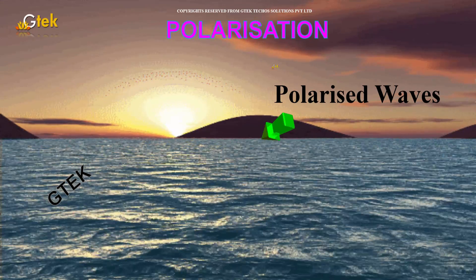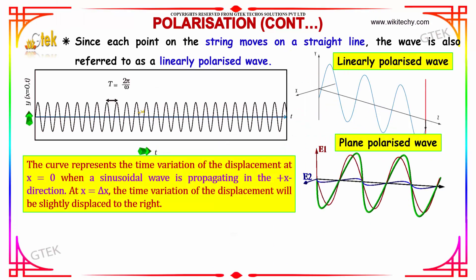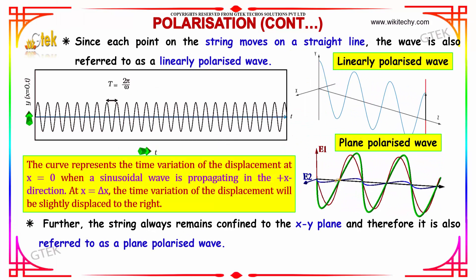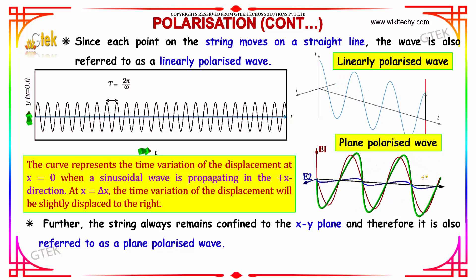Let's move on to polarized waves. Since each point on the string moves on a straight line, the wave is referred to as a linearly polarized wave. Further, the string always remains confined to the x-y plane and therefore it is also referred to as a plane polarized wave.